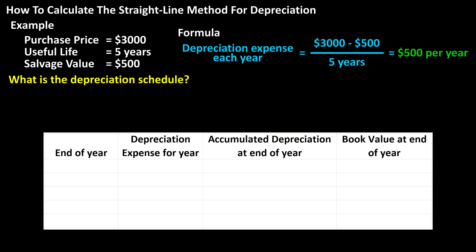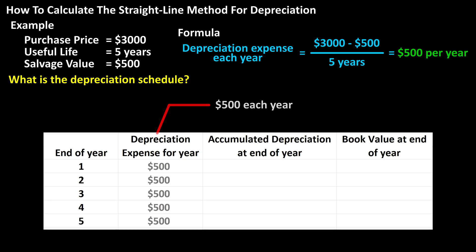For the first column, end of year, this is simply 1, 2, 3, 4, and 5, for the five years of useful life of the asset. For the second column, depreciation expense for year, each of these will be $500. As we calculated a moment ago, there will be a $500 depreciation expense each year.